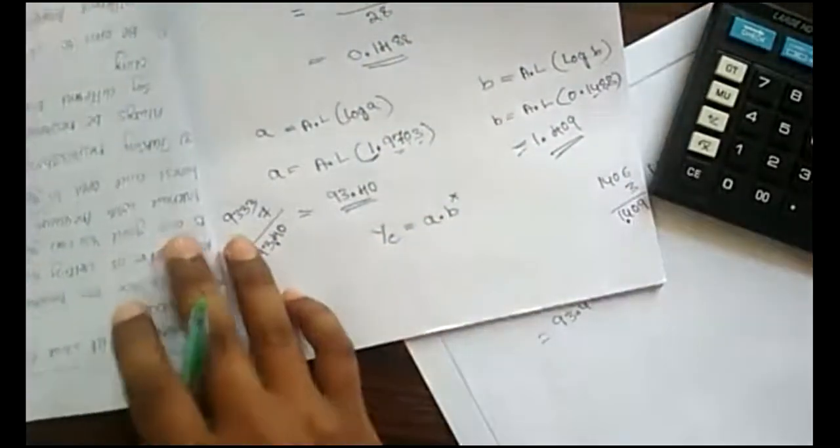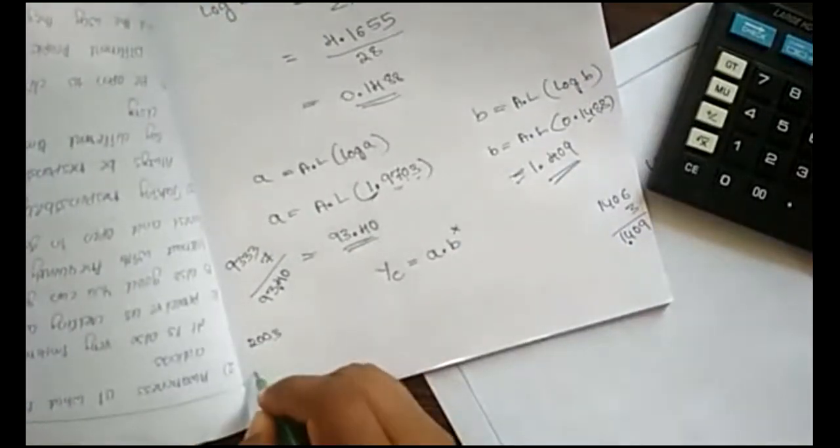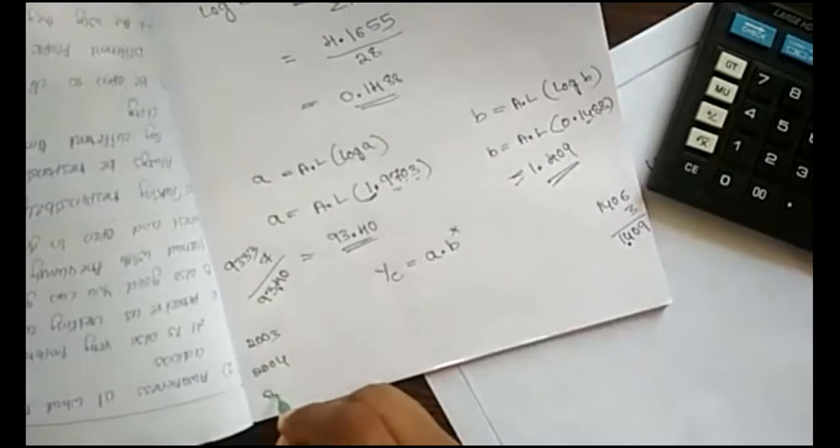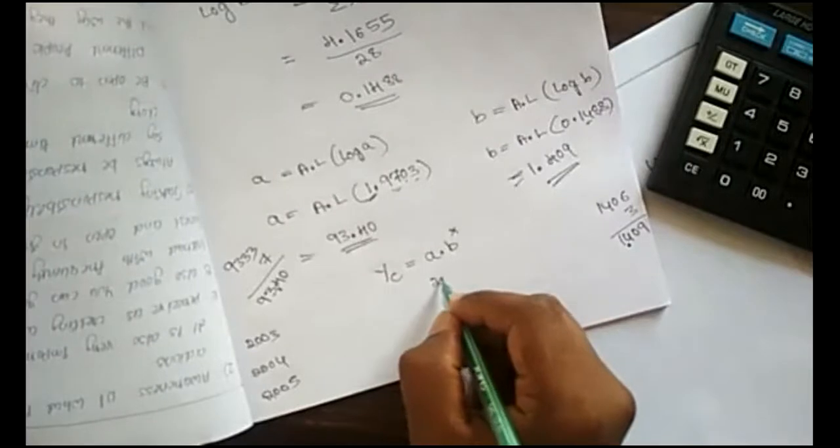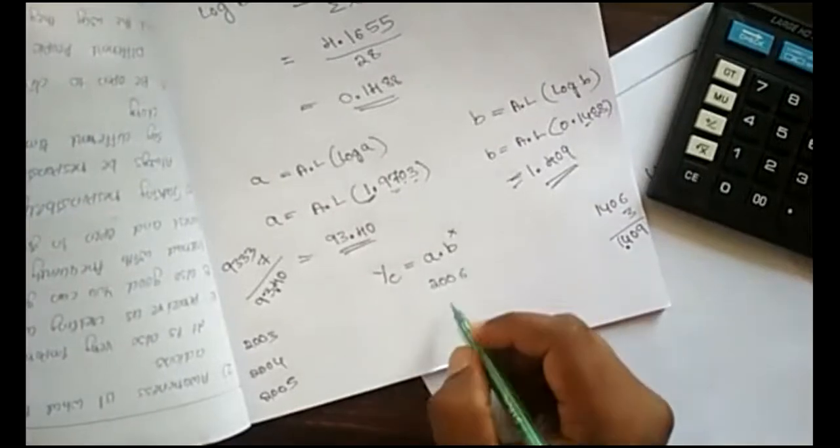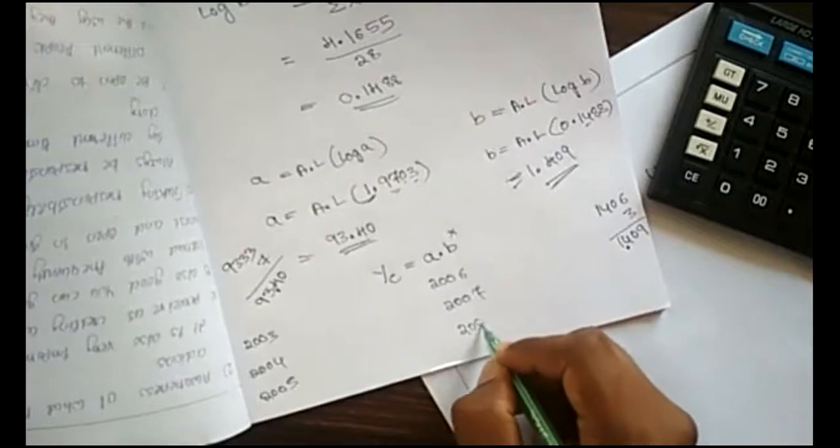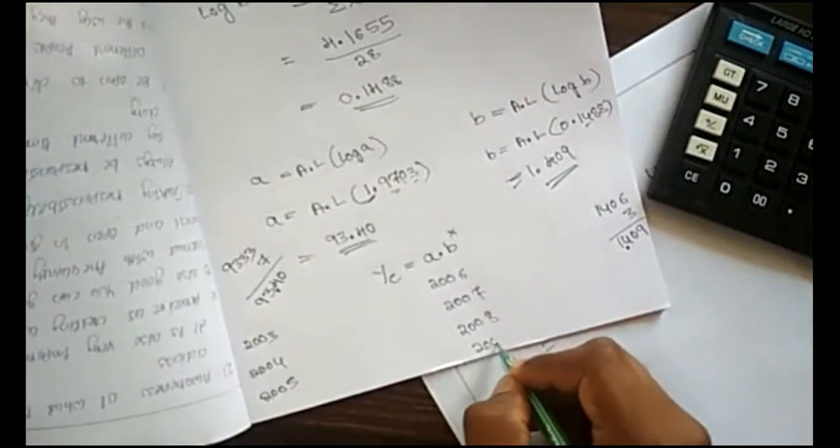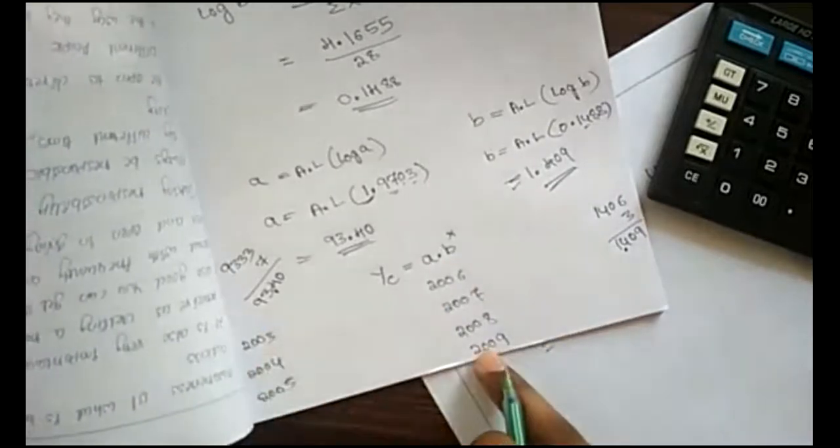Let's see the years, for 2003. Now just find out, 2003, 2004, 2005, then 2006, 2007, 2008. Estimate the trend values by using this equation for 7 years.